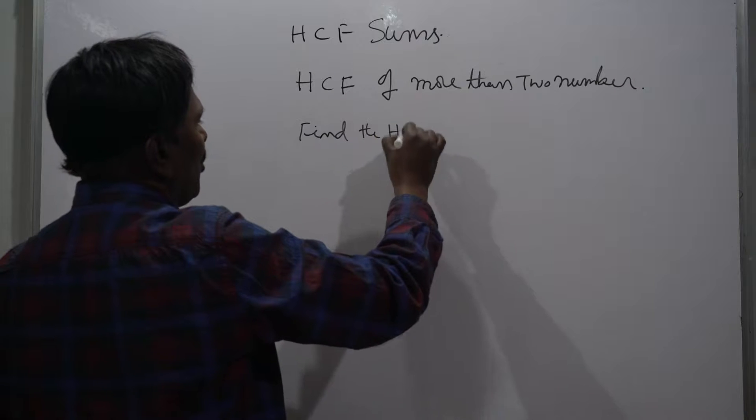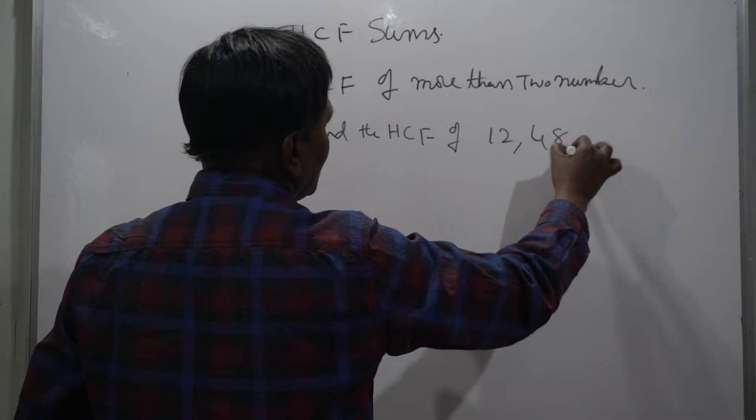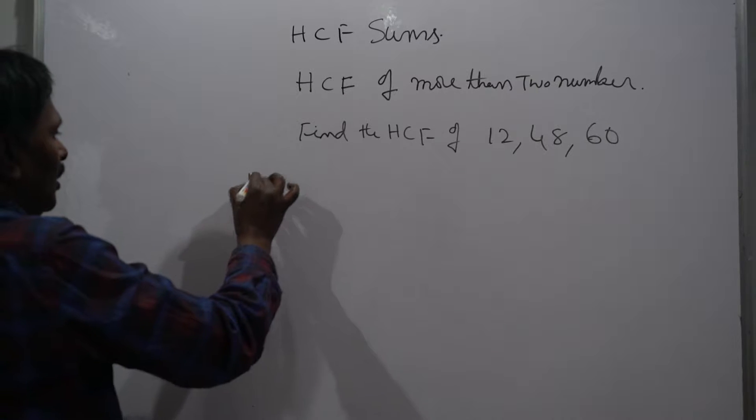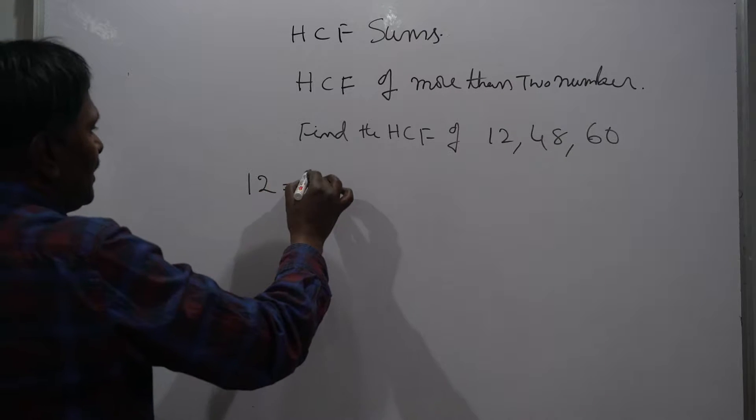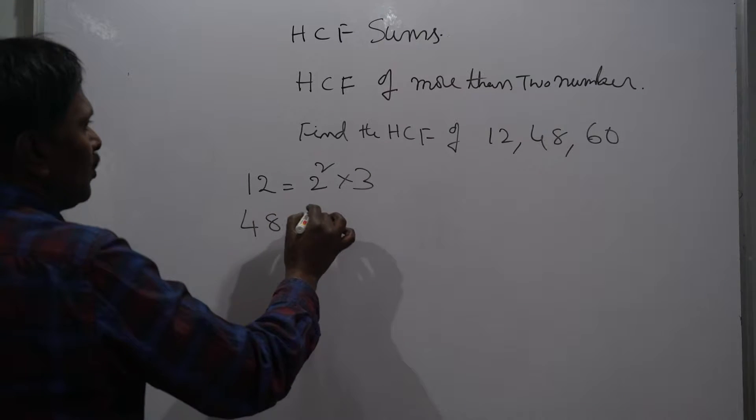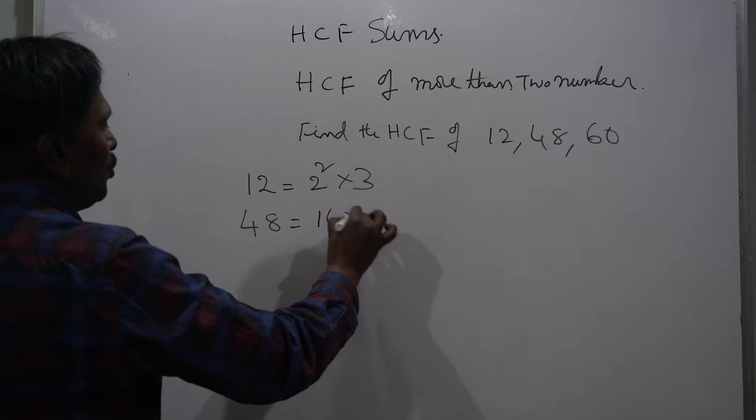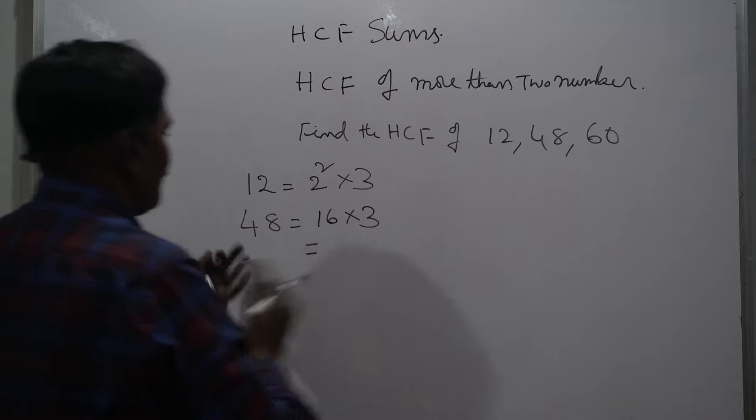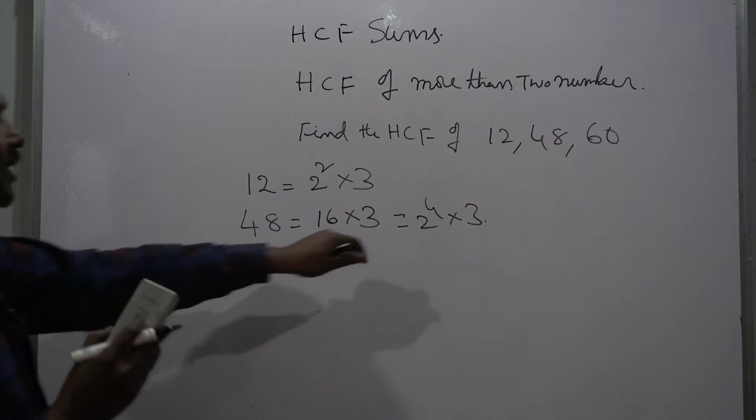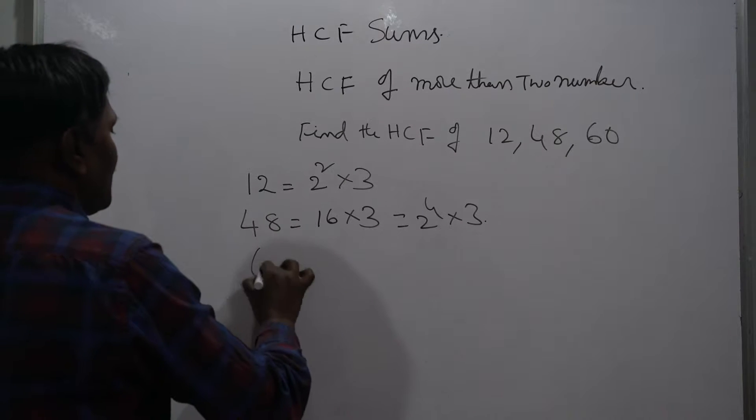Find the HCF of 12, 48, and 60. Same procedure: 12 is 2 squared times 3. 48 is equal to 16 times 3, which can be written as 2 to the 4 times 3. So 2 is a prime factor, 2 is a prime number, 3 is a prime number.